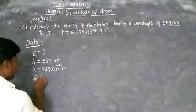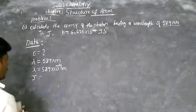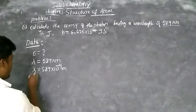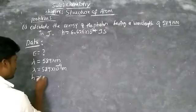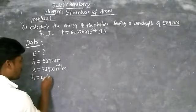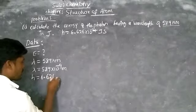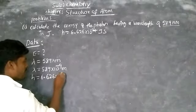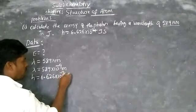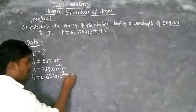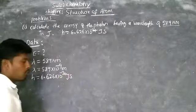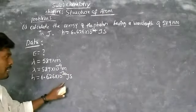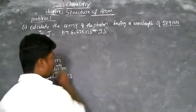H is given — Planck's constant — that is 6.626 × 10⁻³⁴ joule·second. You should remember the unit along with the value, that is joule·second.